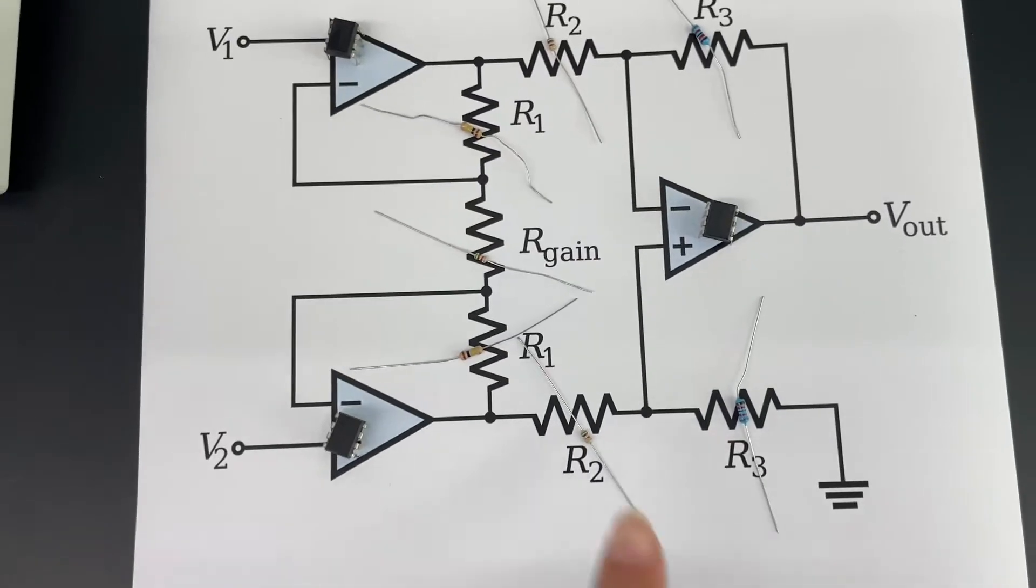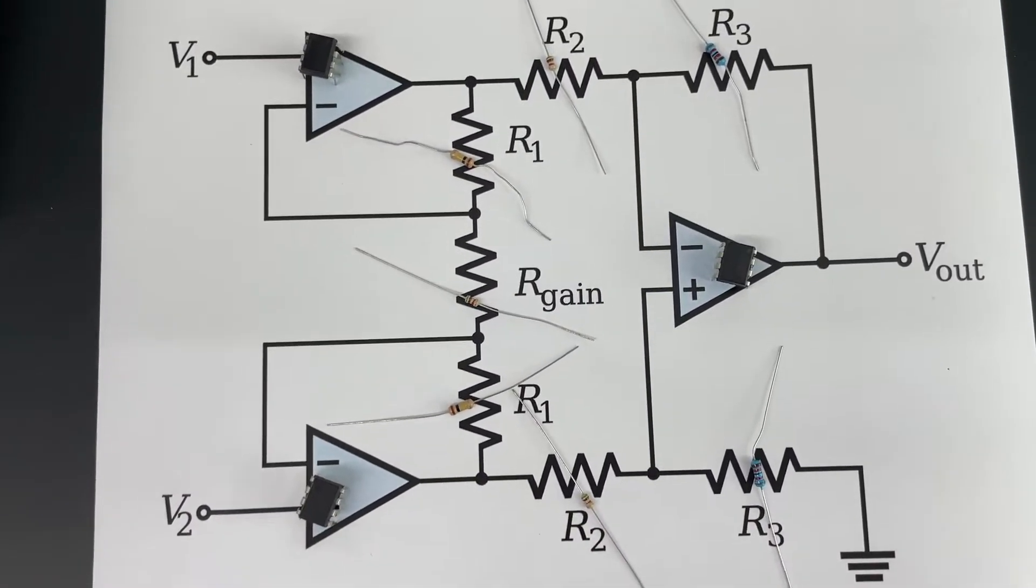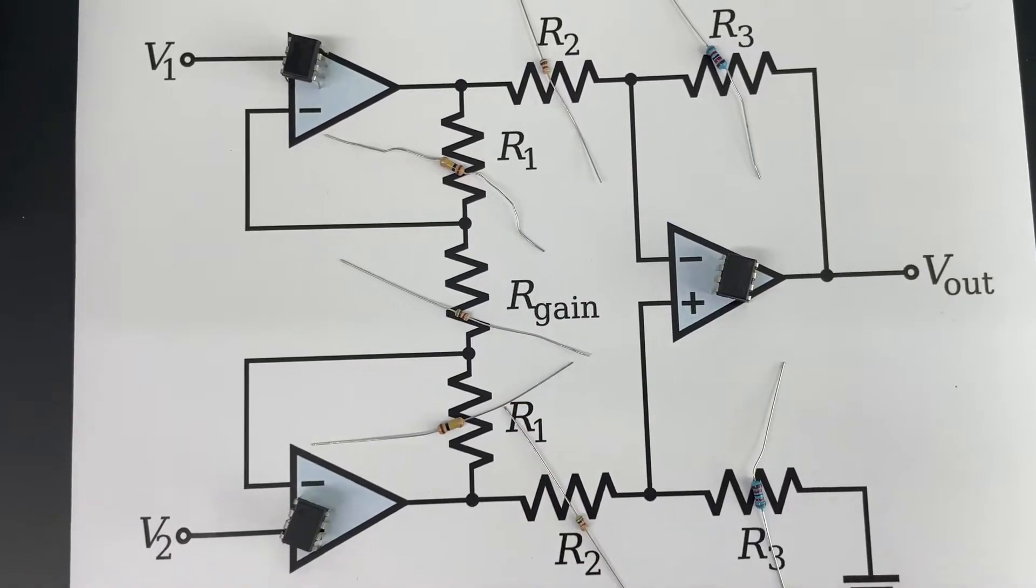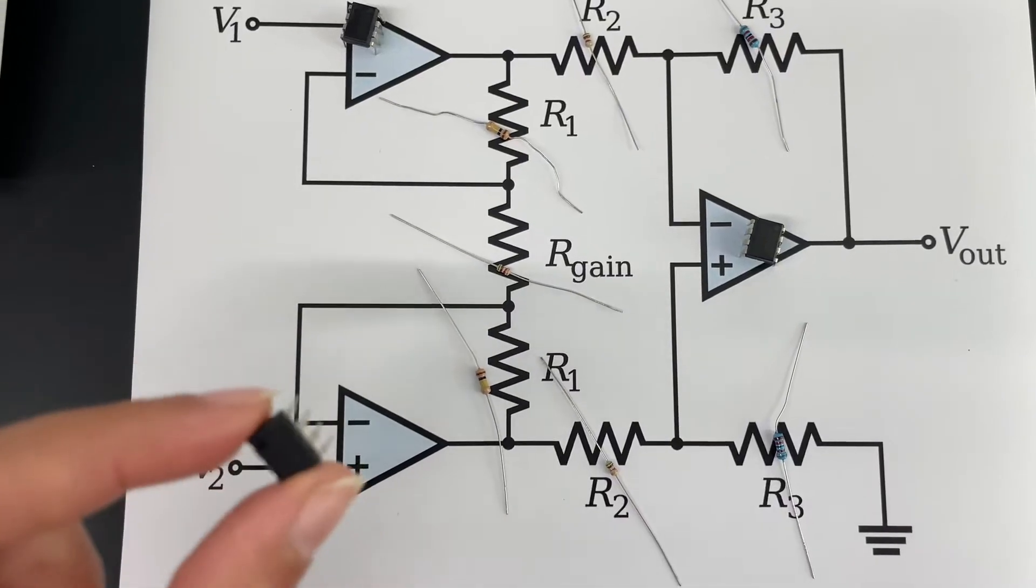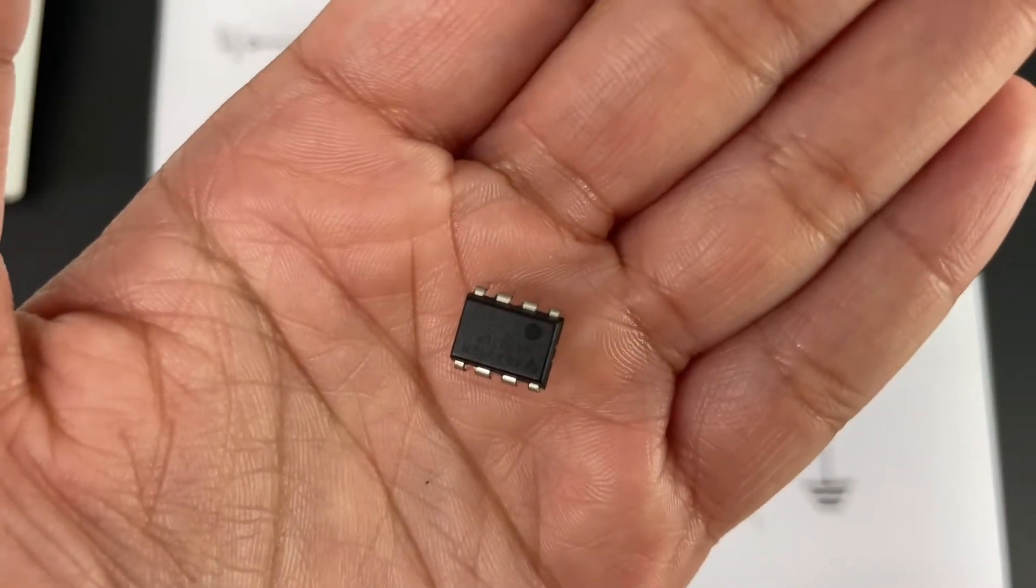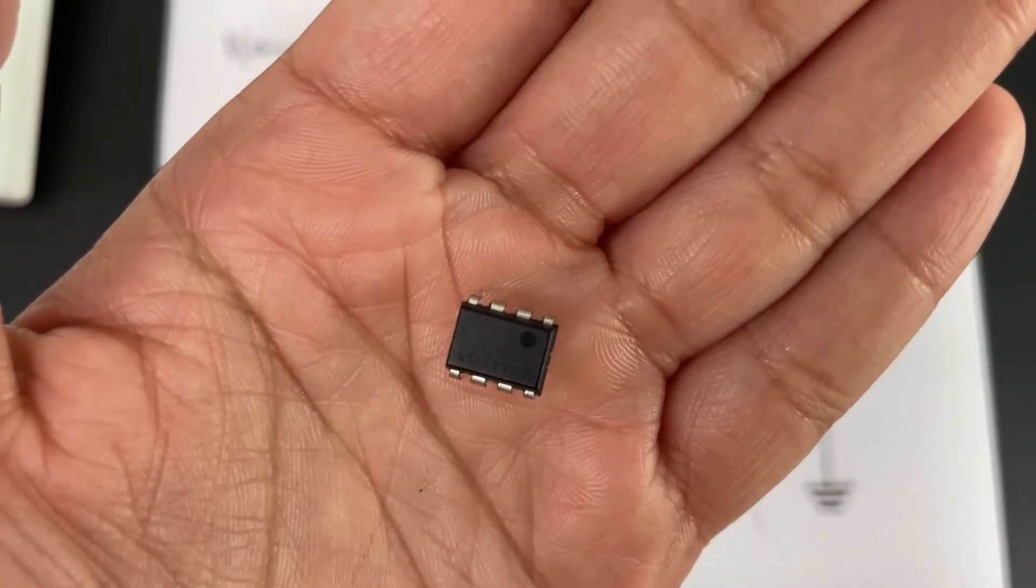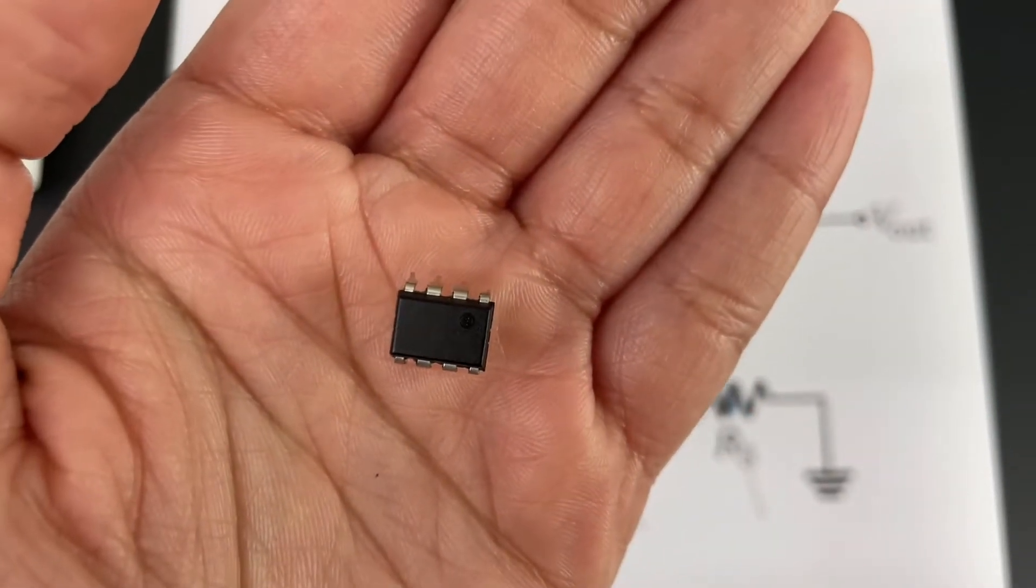The first step would be to double check that the resistor values are correct, that you didn't mess up the colors. Then we have these 741 op amps. You need to remember that you read the op amp pin 1 from the dot - as you can see there's a little circle there signifying node number one.